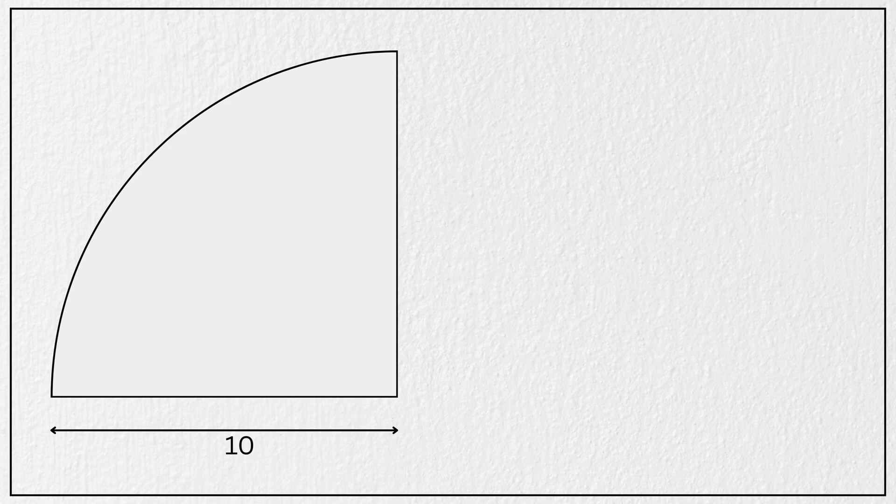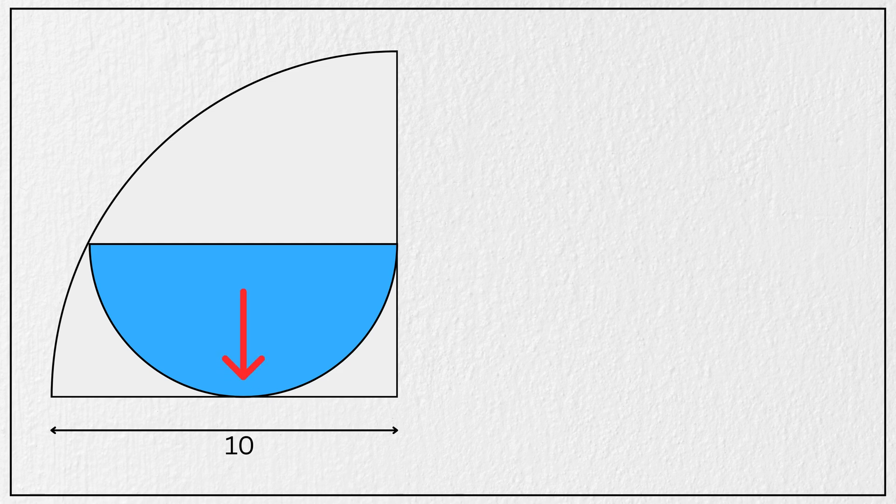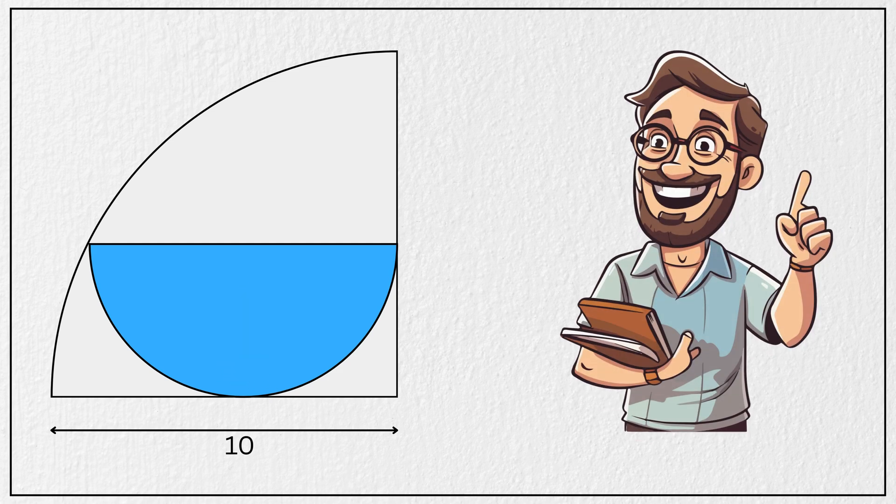Inside this quarter circle, a blue shaded semicircle is placed in such a way that its arc is tangent to the bottom edge of the quarter circle like this. And our goal is to find the area of this blue shaded semicircle.